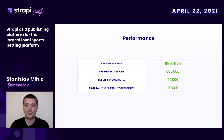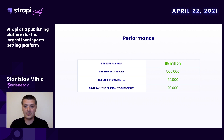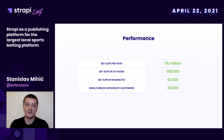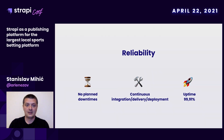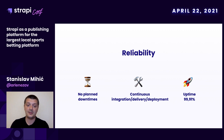A few numbers behind our product: we have 115 million bet slips per year. Our record is half a million bet slips in 24 hours, 52,000 bet slips in 60 minutes, and around 20,000 simultaneous sessions by our players. We don't have planned downtimes. We rely on continuous integration, delivery, and deployment. Our uptime is 99.91%.